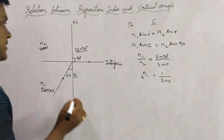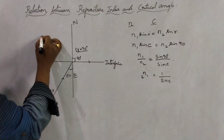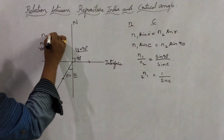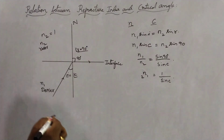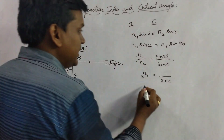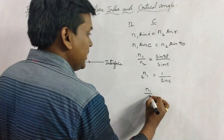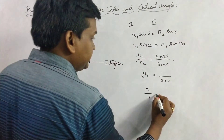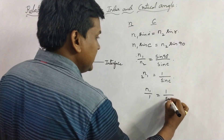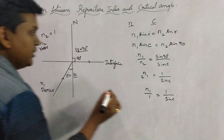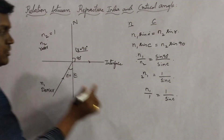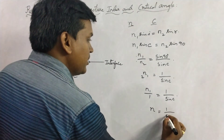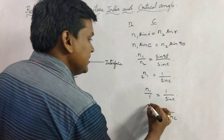If we consider that medium M2 is air, then the refractive index of M2 will be equal to 1. So this can be written as N1 by 1, since N2 equals 1, and that equals 1 by sin C. Now there is no distinction between N1 and N2, so we can simply write it as refractive index N.